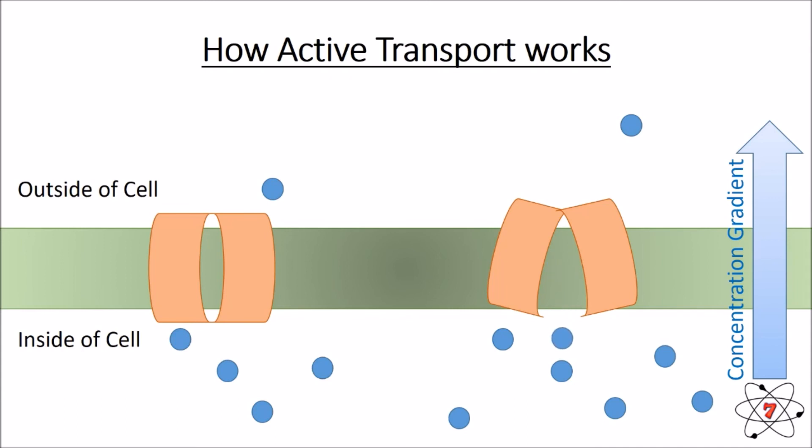Energy has been used to move a particle against the concentration gradient, and this is the only way you can ever move substances against the concentration gradient within a cell. If a cell needs more and more of a substance, it has to use active transport and needs energy to do so. Without energy, active transport cannot occur.